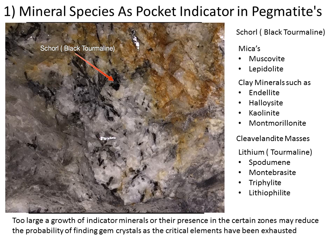Once you've found the pegmatite, you need to find the pocket. Clues include black tourmaline and certain minerals like clevelandite that point toward where the pocket is. As you get closer to the center, crystal size increases. Locate the margins, then the core is usually around the center. Crystal size should grow from the outside in, and you'll hopefully find tourmalines and other gem minerals — though it has to be said that most pegmatites are plain and vanilla and you won't find gemstones, but they're all worth looking into.